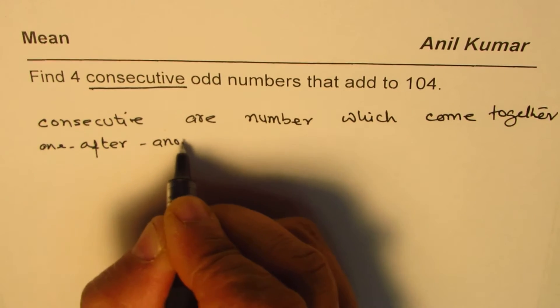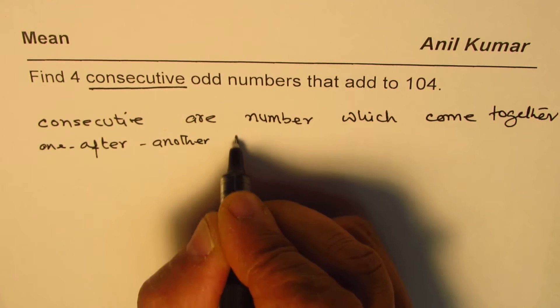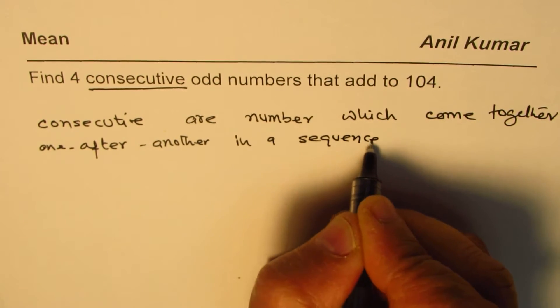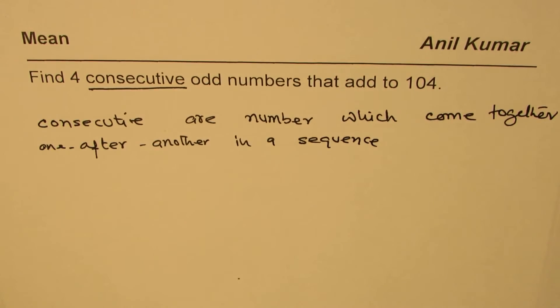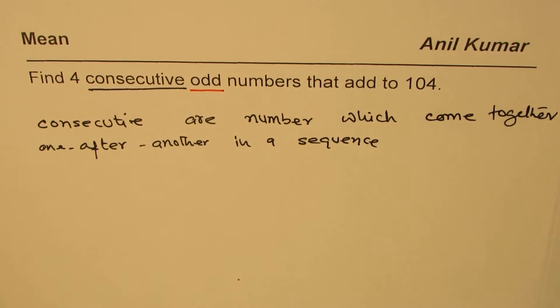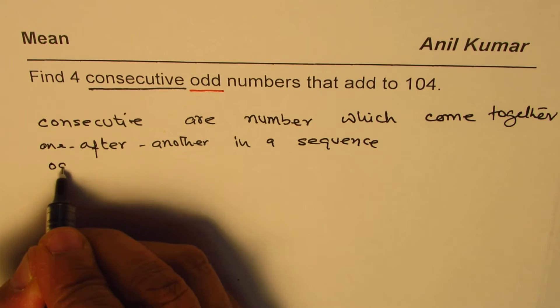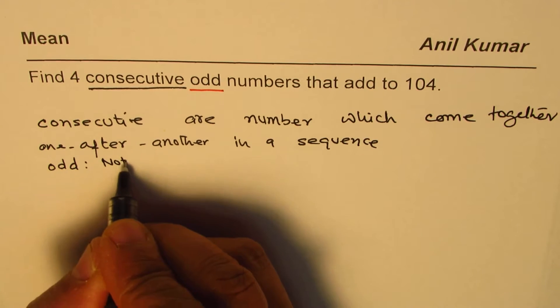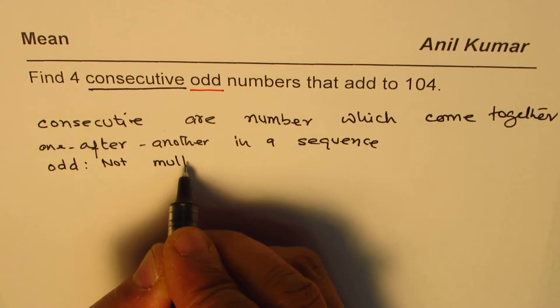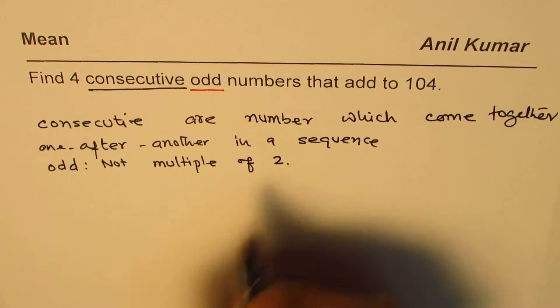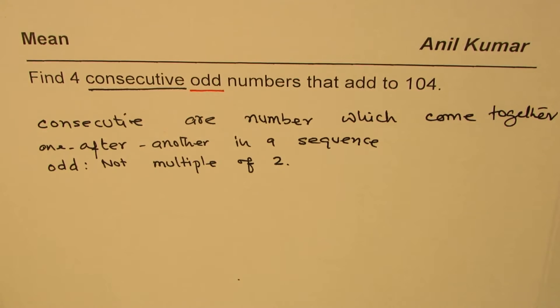After another in a sequence. Now here we have consecutive and also odd, so the two things are combined: consecutive and odd. And odd numbers are the numbers which are not multiple of two. Multiples of two are even.